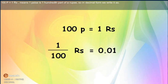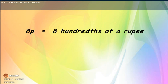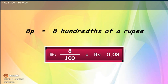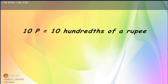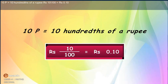So, in decimal, we write: 8 paise equals 8/100 of a rupee, which means rupees 8 upon 100, or rupees 0.08. 10 paise equals 10/100 of a rupee, which means rupees 10 upon 100, or rupees 0.10.